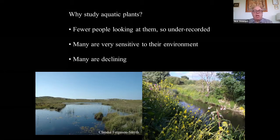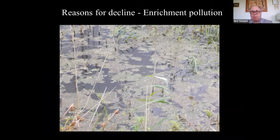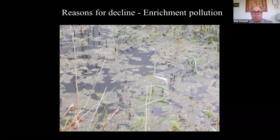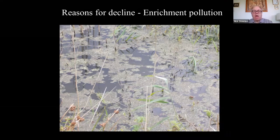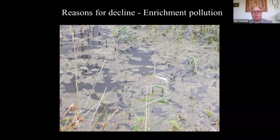The main threat is enrichment pollution — nitrates and phosphates coming from agriculture or from sewage treatment, which doesn't necessarily remove the nitrates and phosphates. That can completely change the whole balance of the system. You tend to get algal blooms, deoxygenation, and all sorts of problems. It's like putting fertilizer on a field — it's the same in the aquatic environment and it completely changes things.